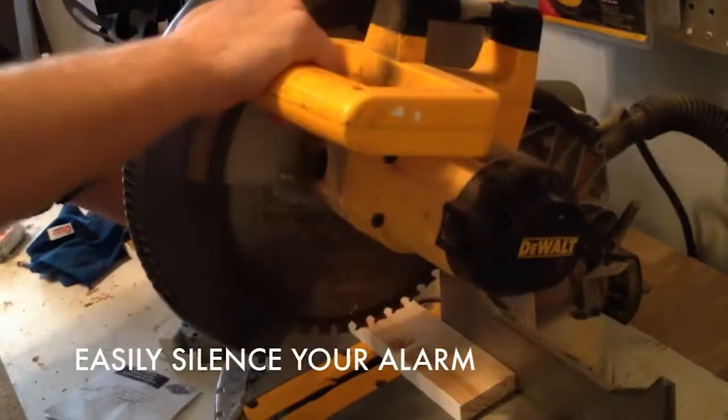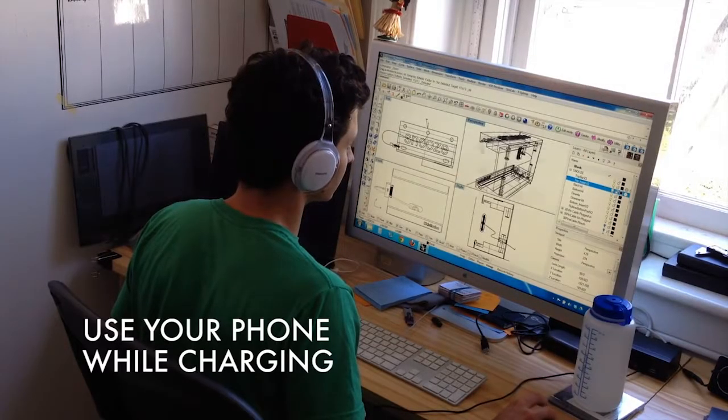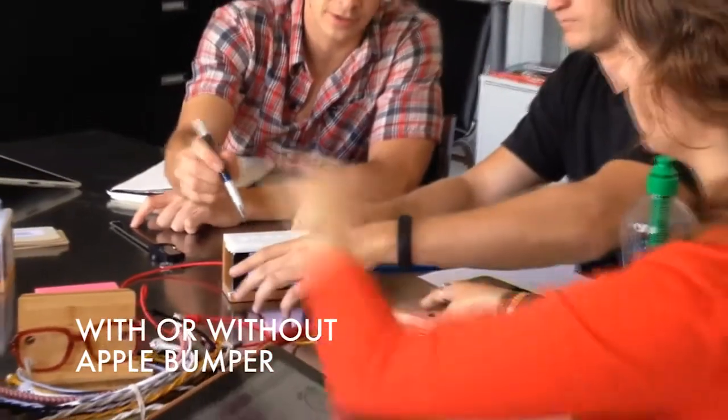It should easily silence your alarm. It should be an attractive bedside home for your phone. You should be able to use your phone while it's charging and it should work with or without the Apple bumper.